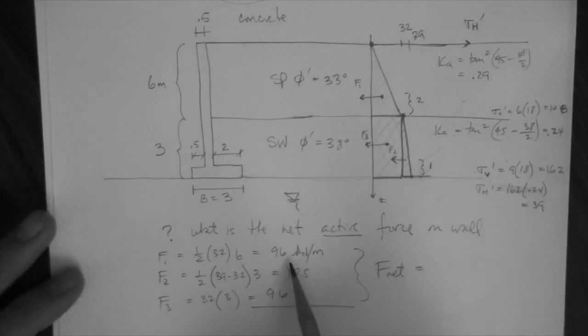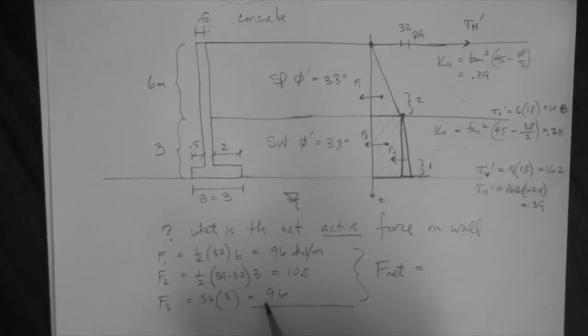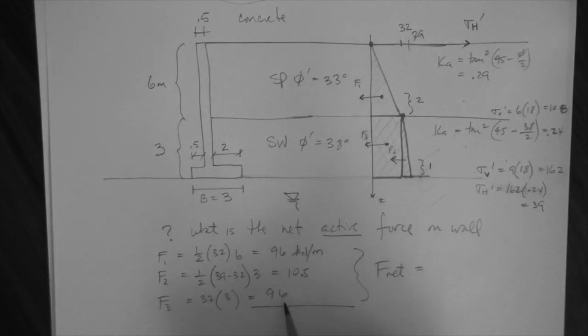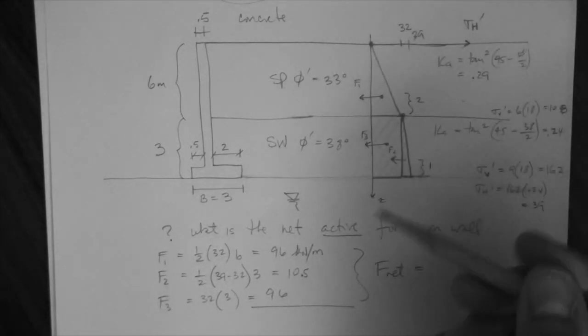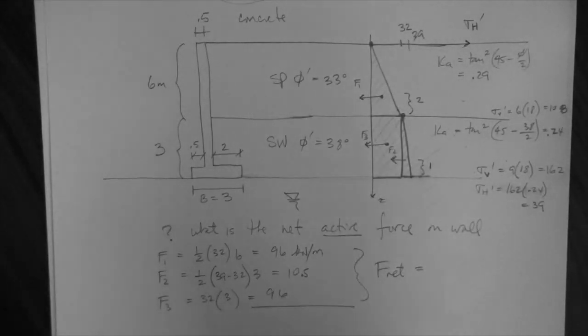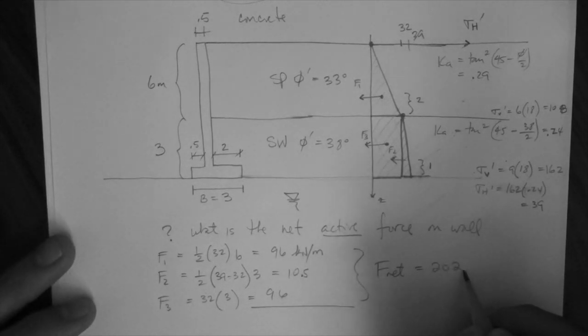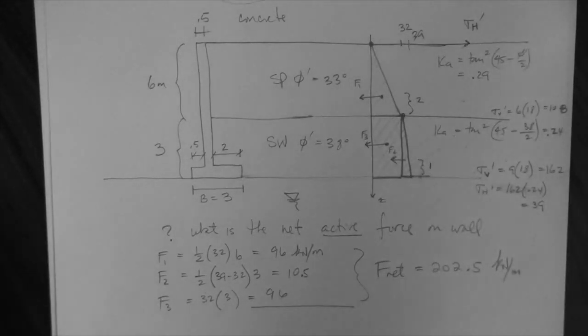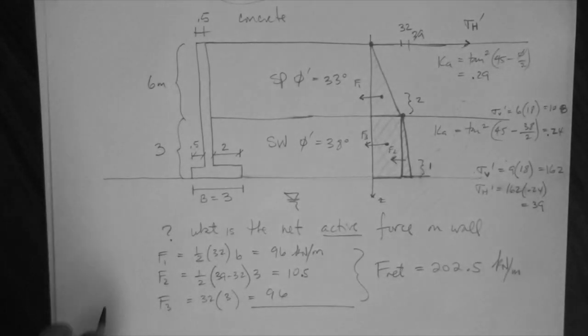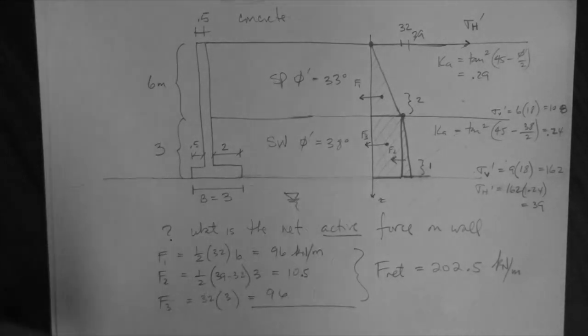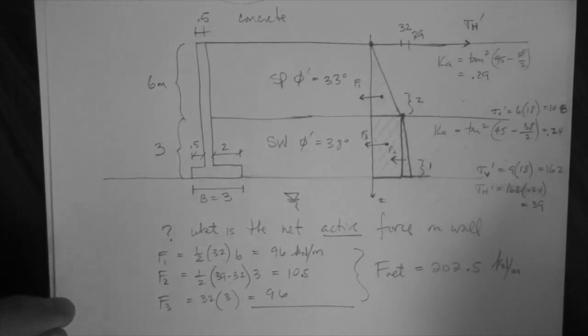So here are the values. They're kind of easy to calculate. 96, 10.5, and 96 kilonewton per meter each. So the net force is the sum of those three, which is the area of the whole thing. And that is 202.5 kilonewton per meter. So the force is 202.5 kilonewton, and that acts for every meter of wall into the paper.